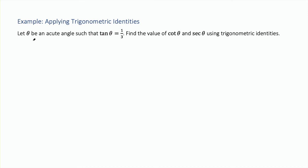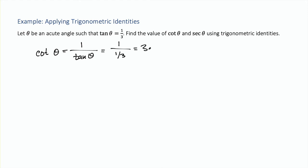In another example, theta is an acute angle with tangent of theta equal to 1/3. We want to find cotangent of theta and secant of theta using trigonometric identities. Since tangent and cotangent are reciprocals of each other, cotangent of theta equals 1 over tangent of theta, which is 1 over 1/3, equal to 3.